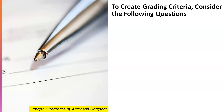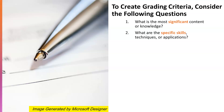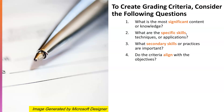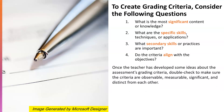To create grading criteria, consider the following questions: 1. What is the most significant content or knowledge students should be able to demonstrate understanding of at this point in the course? 2. What specific skills, techniques, or applications should students be able to use at this point in the course? 3. What secondary skills or practices are important — for example, critical thinking, public speaking, or writing, as well as more abstract concepts such as completeness, creativity, precision, or problem-solving abilities? 4. Do the criteria align with the objectives for both the assessment and the course? Once developed, double-check that the criteria are observable, measurable, significant, and distinct from each other.